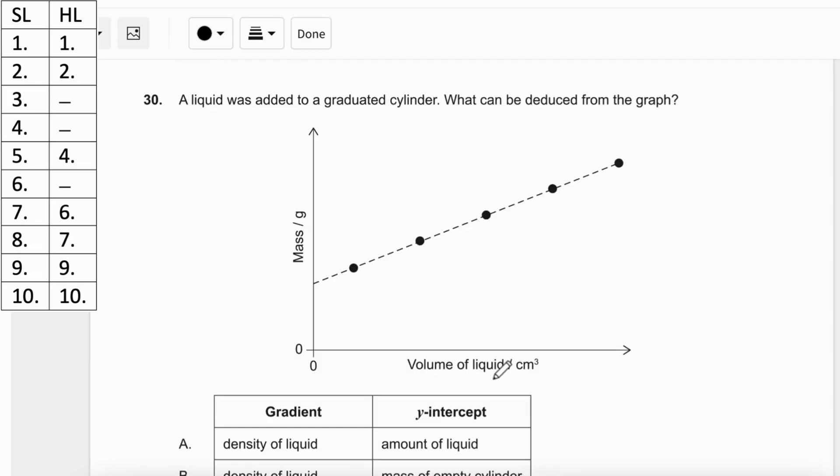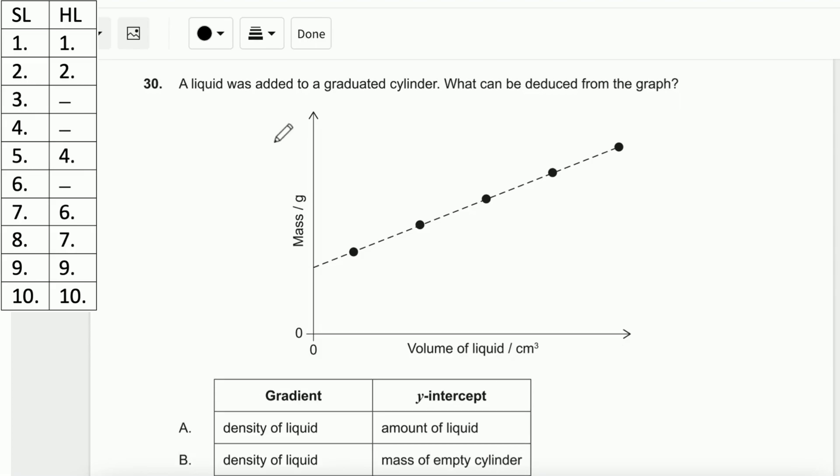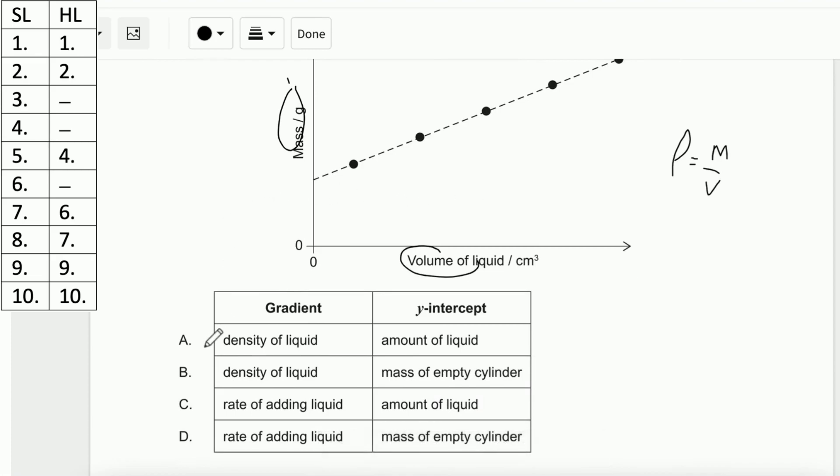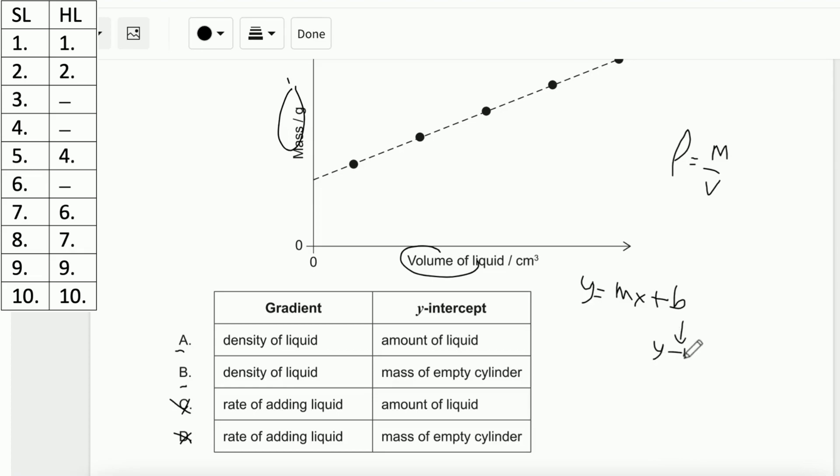Number 30. A liquid was added to a graduated cylinder. What can be deduced from the graph? When you see the graph with mass and volume, you can directly think it's density. What can be deduced? Density of the liquid, and it's between A and B - amount of liquid or mass of empty cylinder. This Y-intercept describes where the line crosses the Y-axis. When volume is zero, we can check the mass of empty cylinder. Therefore, the answer is B.